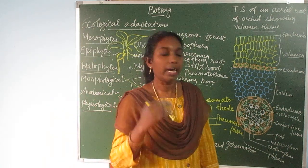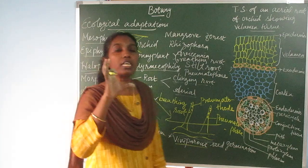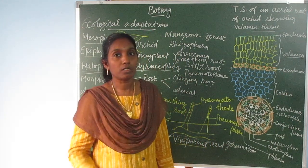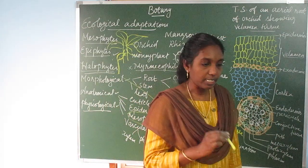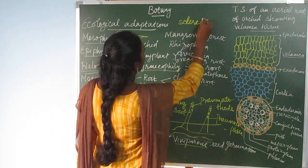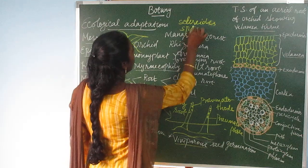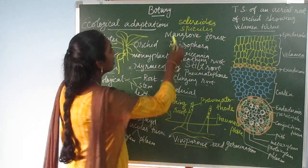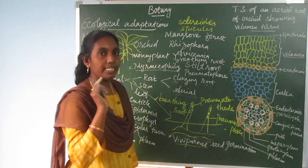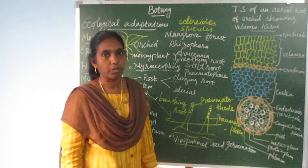For anatomical adaptations of halophytes: the epidermal layers consist of a thick cuticle. Star-shaped scleroids and H-shaped thickened spicules are also present. Scleroids are otherwise called stone cells and are star-shaped in halophytes. Spicules are H-shaped and are also present.